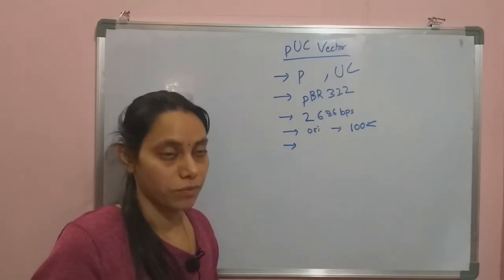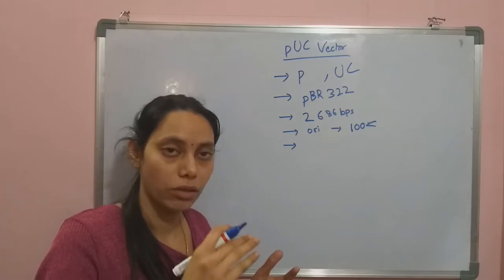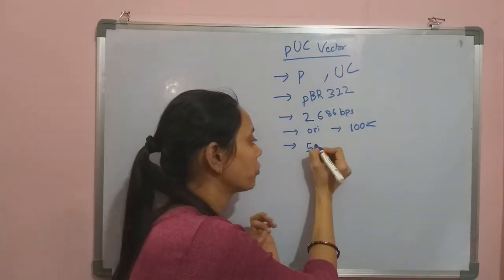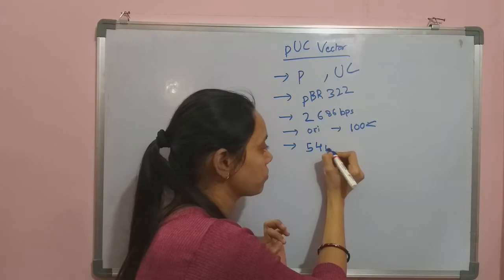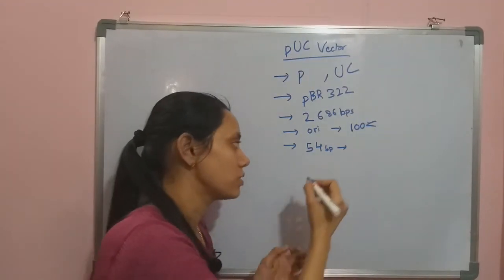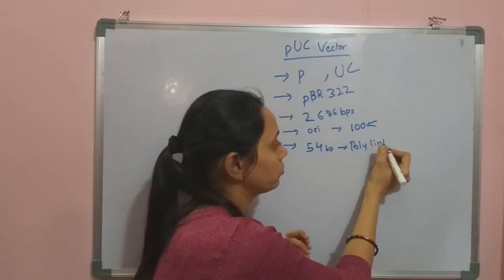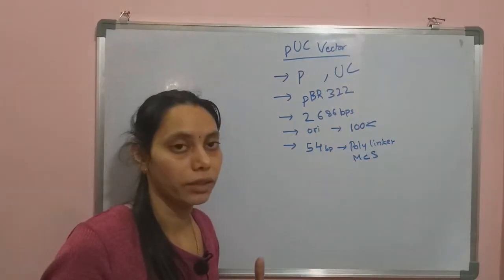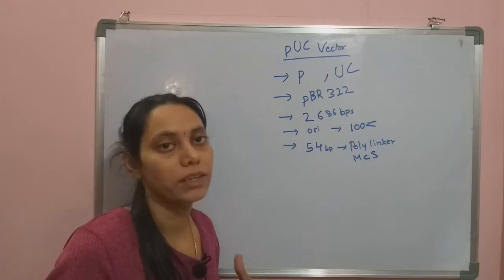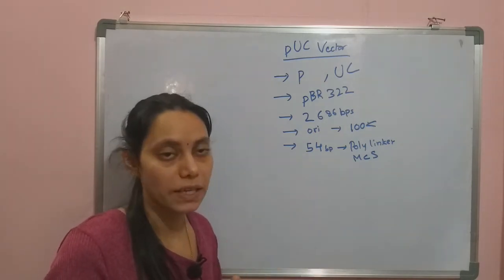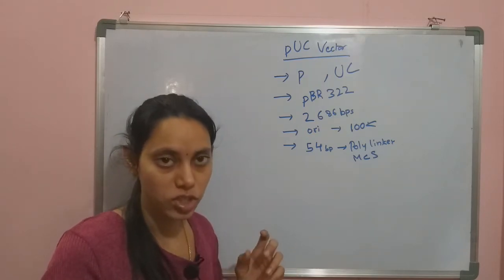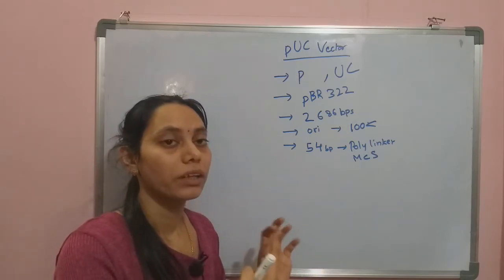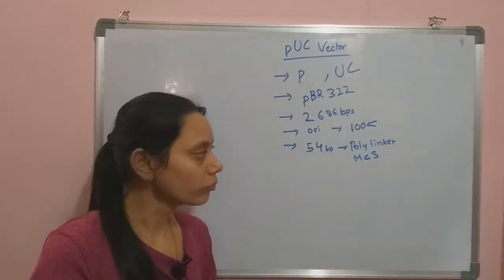The genes present in the PUC vector include poly linkers and selectable markers. There is a 54 base pair region inserted which is considered as the poly linker, also called the multiple cloning site. The poly linker has many restriction sites in this region, meaning we can use restriction enzyme cleavage sites to cut open this plasmid and insert the gene of interest into the PUC vector.